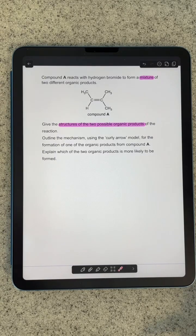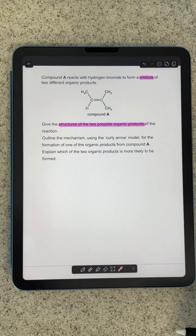So we've got compound A. It's reacting with hydrogen bromide to form a mixture of two different organic products. The first thing you've got to do is draw the structures of the two possible organic products.